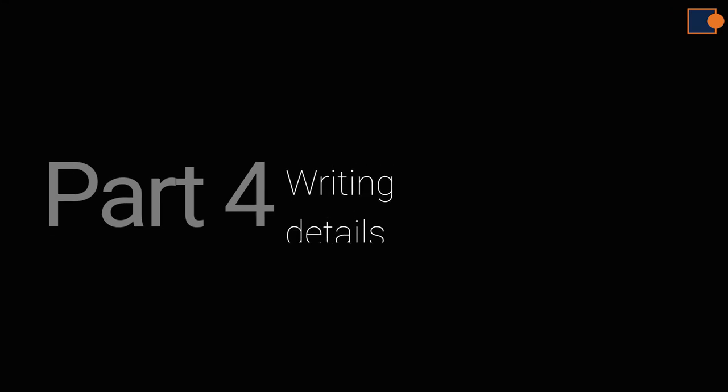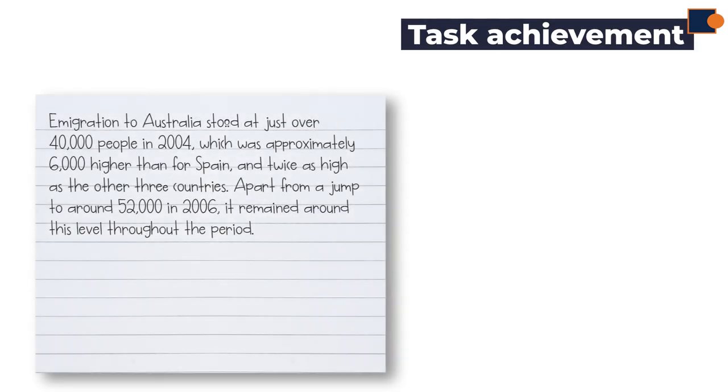Part four details. Now let's analyze a written sample essay using different criteria. In terms of task achievement, you must include relevant comparison and only mention key features. The main comparison here is Australia was 6,000 higher than Spain and twice as high as the other three countries. Moreover, there is a key change which is a jump to around 52,000 in 2006.